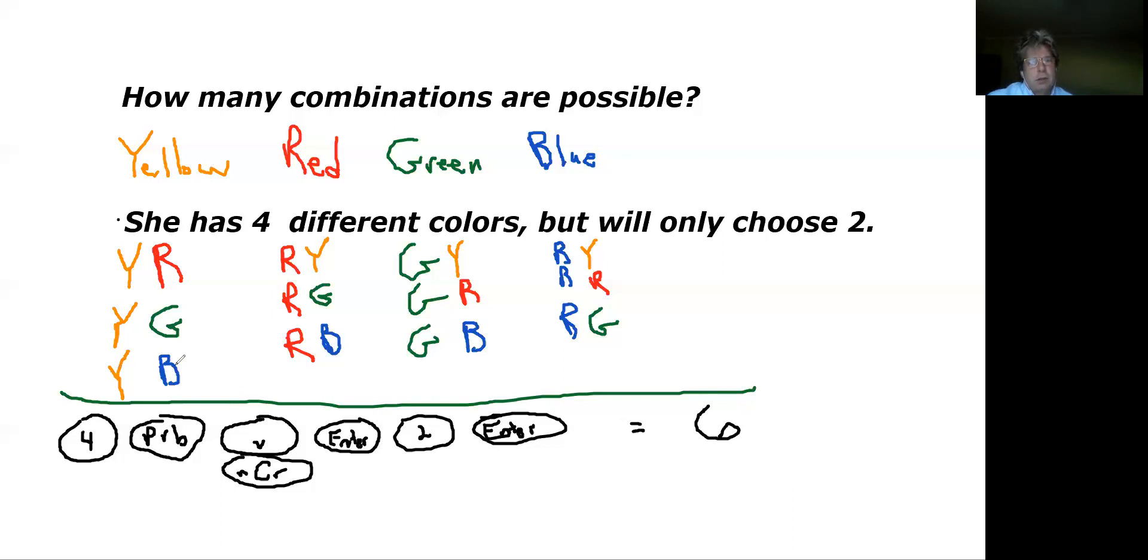If she picked red first, she'd have a red and yellow, but red and yellow is really the same thing as yellow and red, so that's really the same pattern in design. That's just a repeat, so you just mark that one out. She would have red-green as another different option.